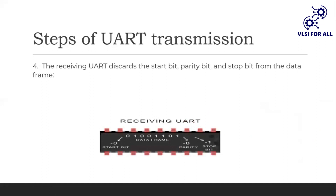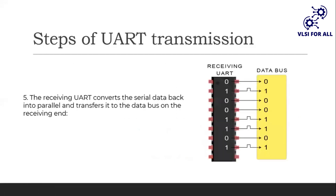The receiving UART, after receiving the data packet from the transmitting end, discards the start bit, parity bit, and stop bit from the data frame. It then transforms the serial data back into parallel data, and it goes via the data bus to the receiving microcontroller or FPGA.